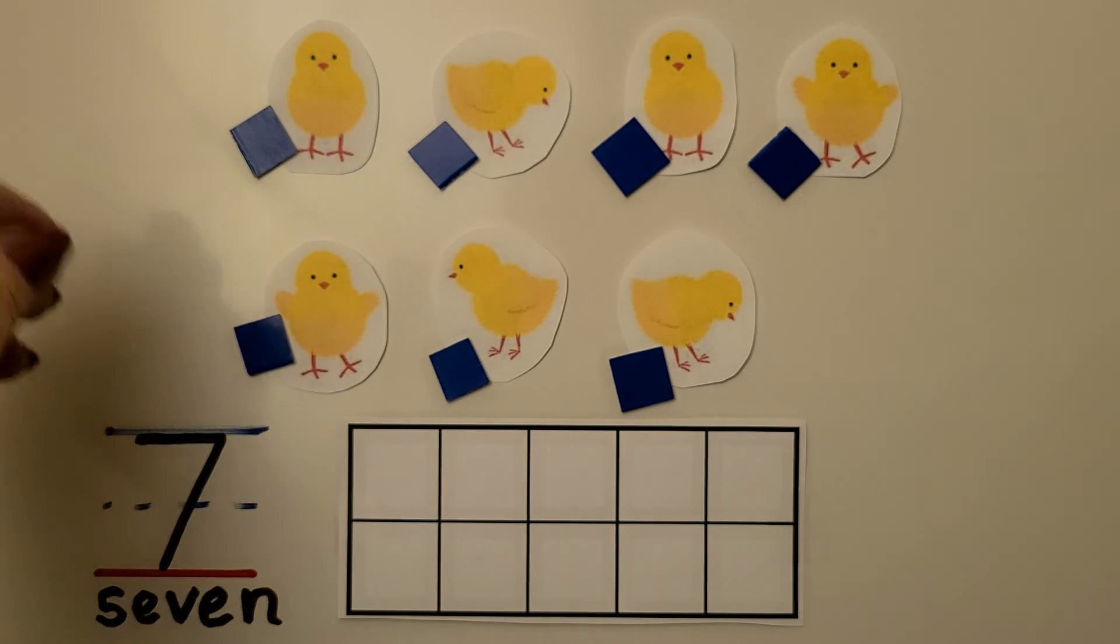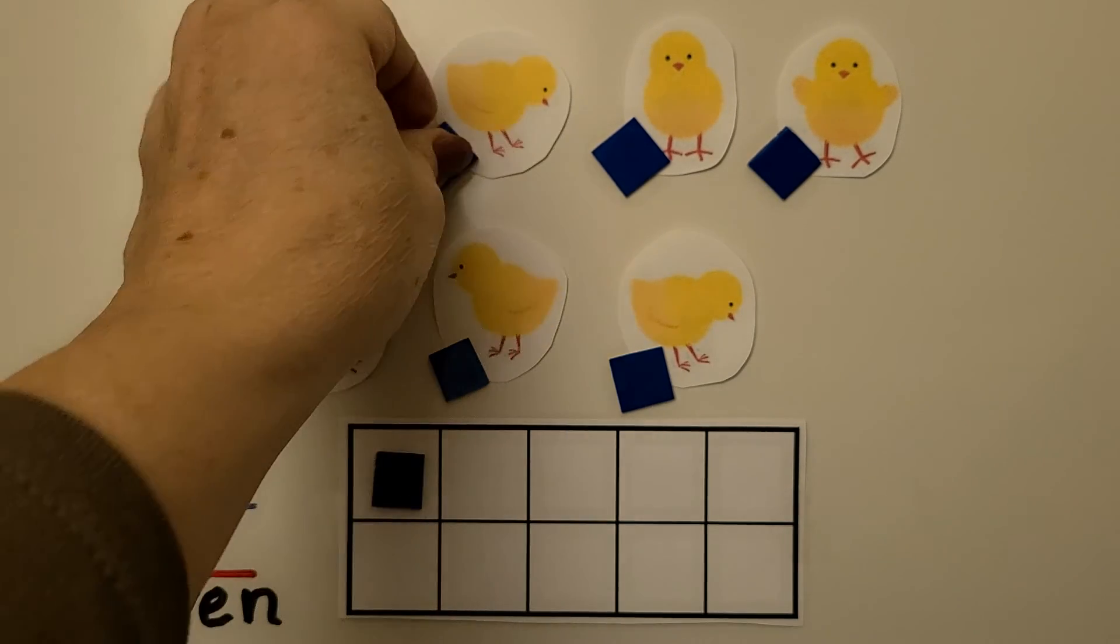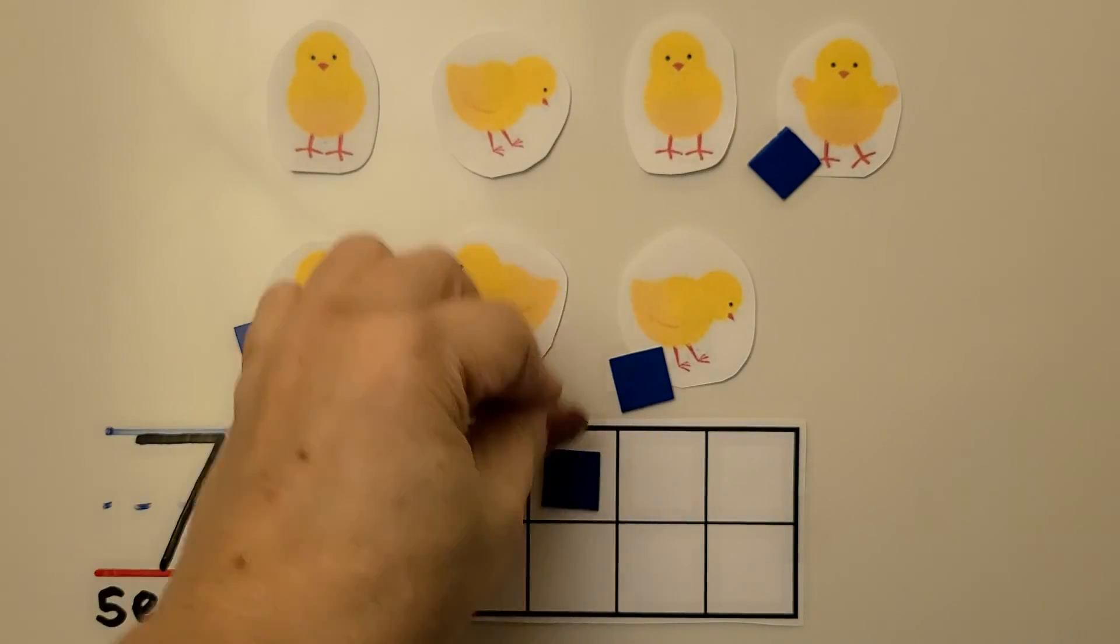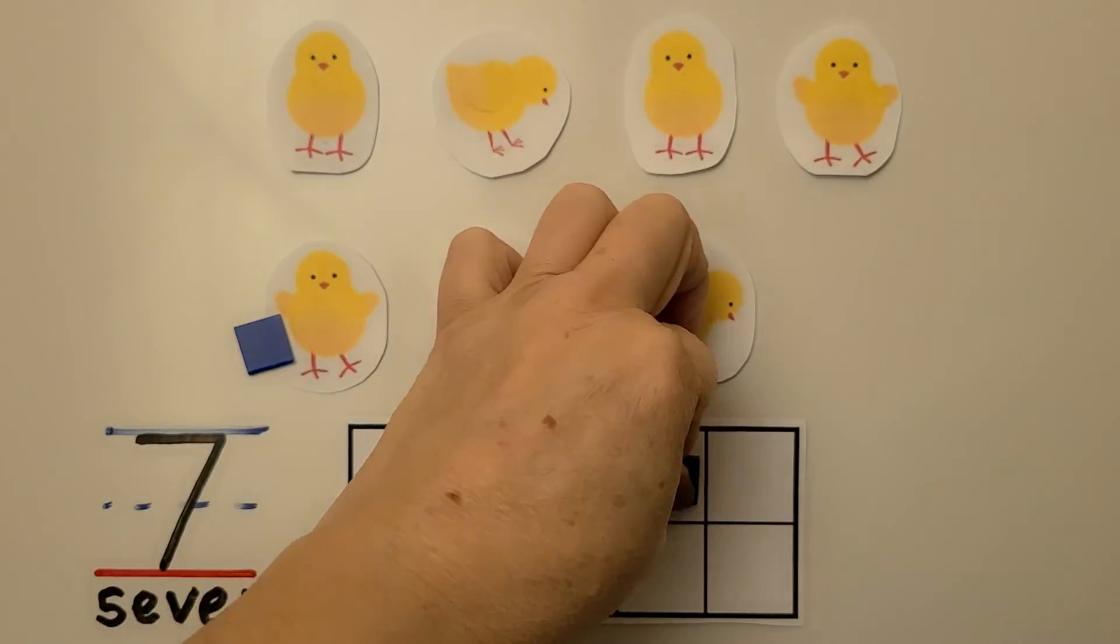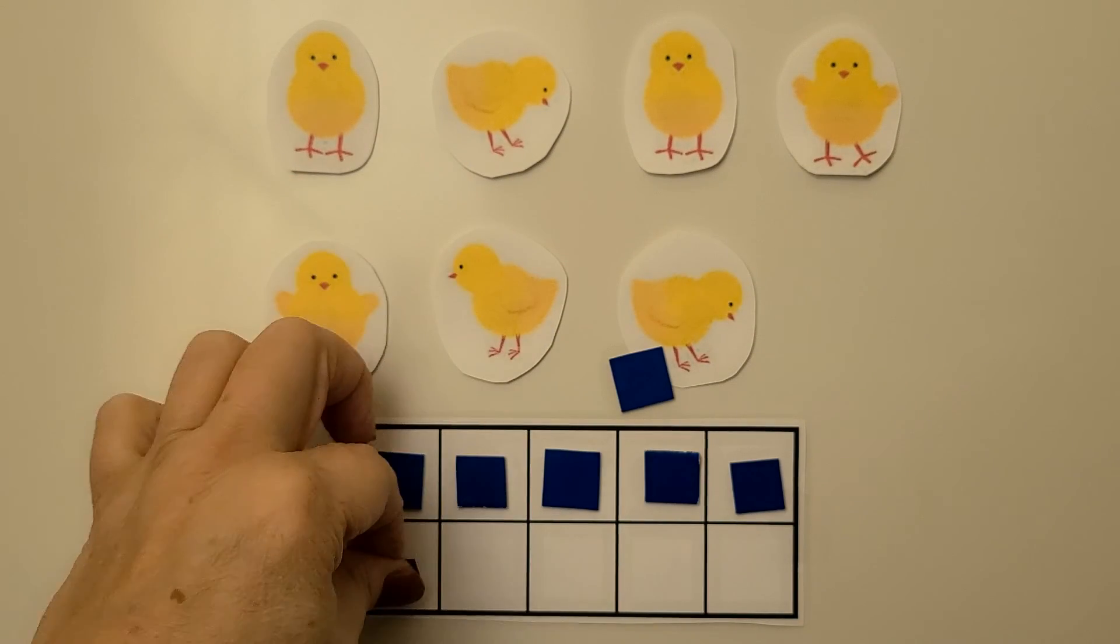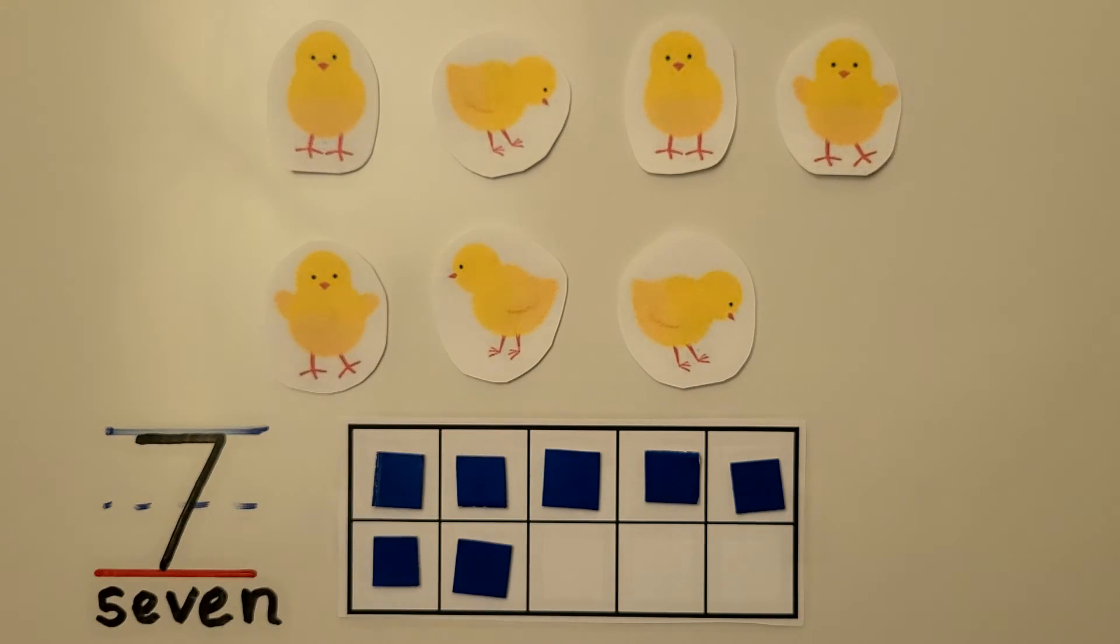We can put the counters into the 10 frame. We have 1, 2, 3, 4, 5, 6, 7. 7 counters, 7 chicks.